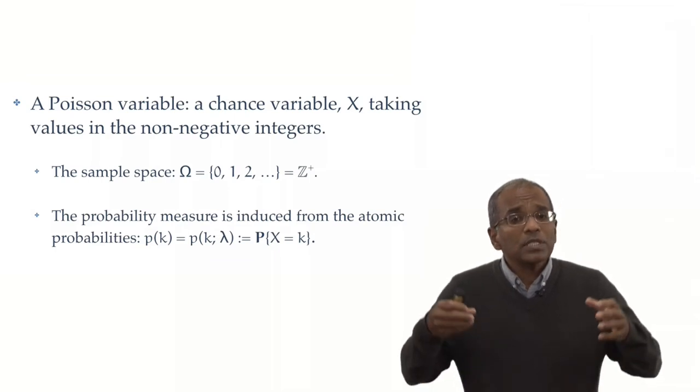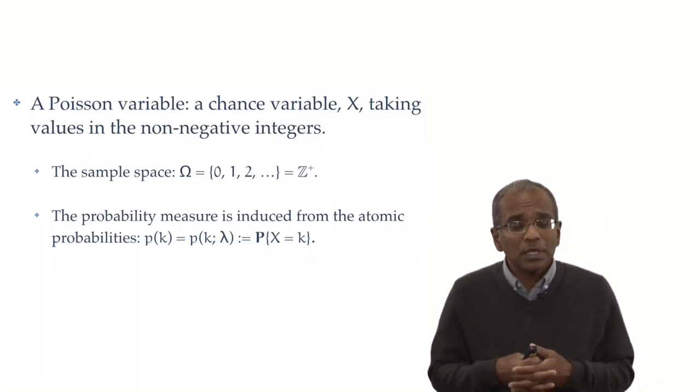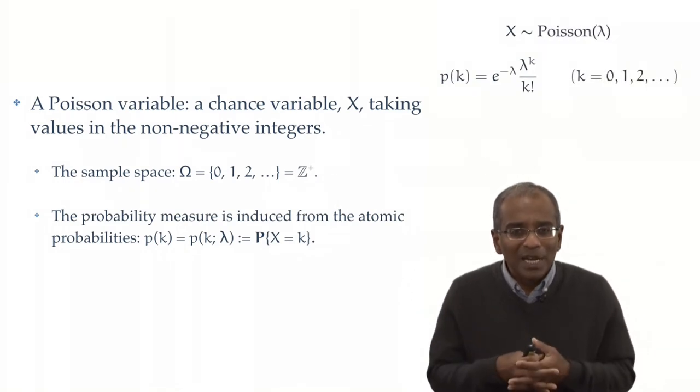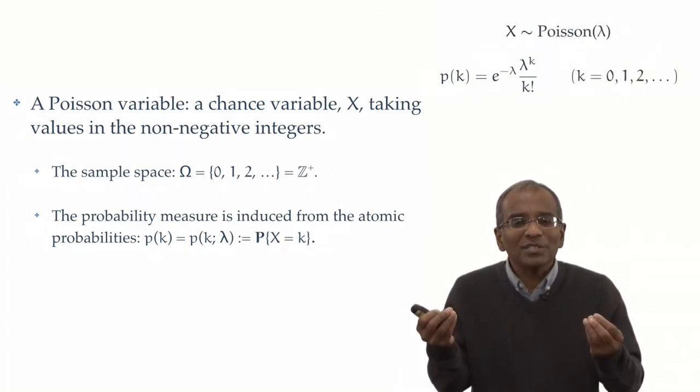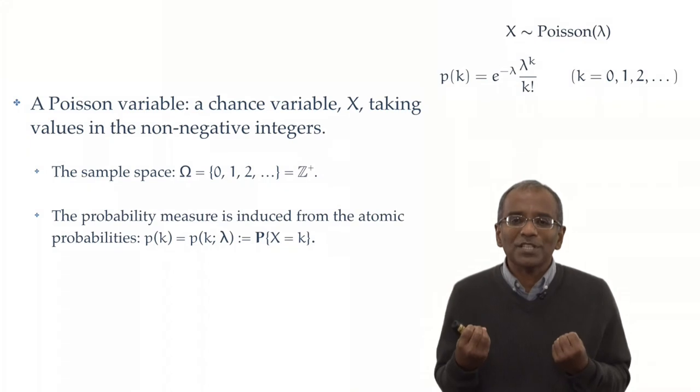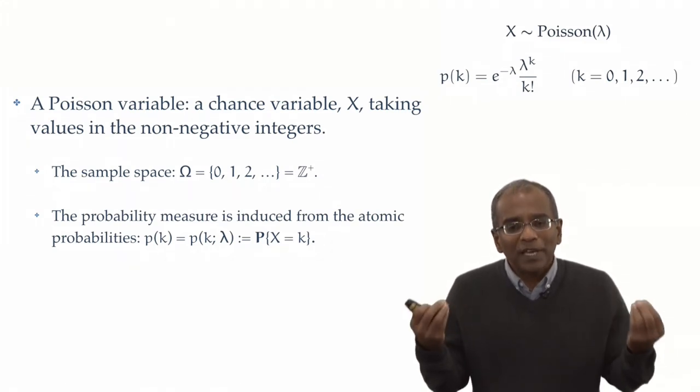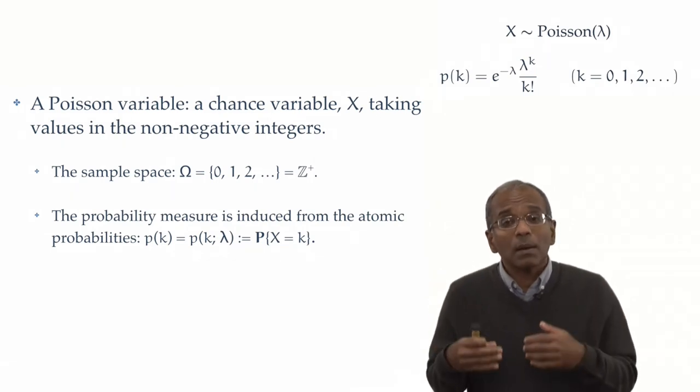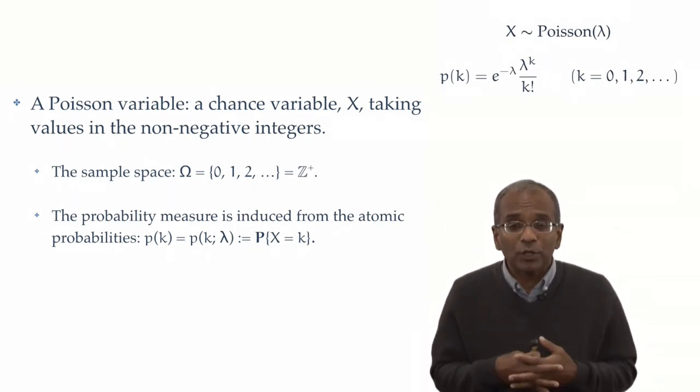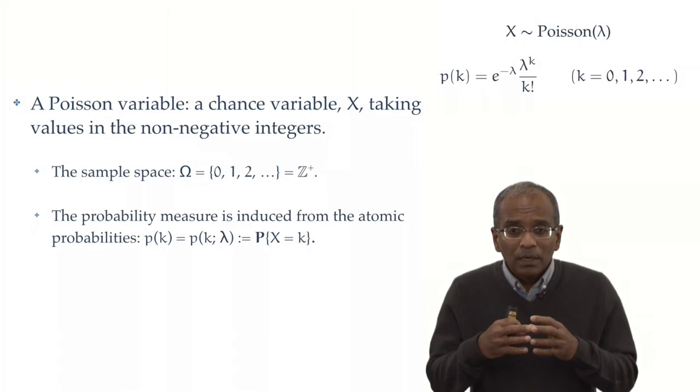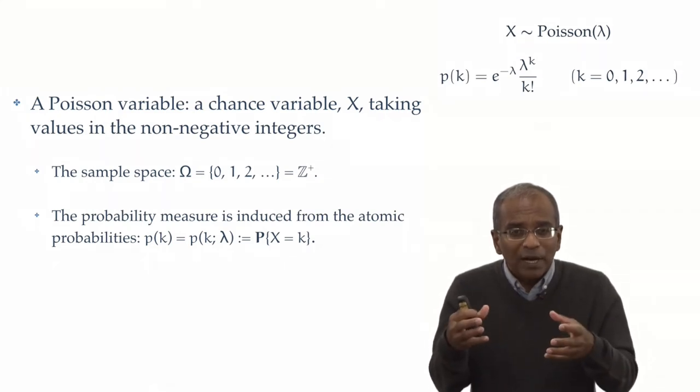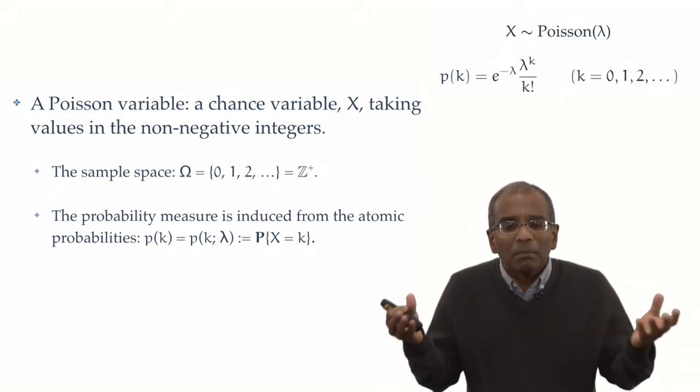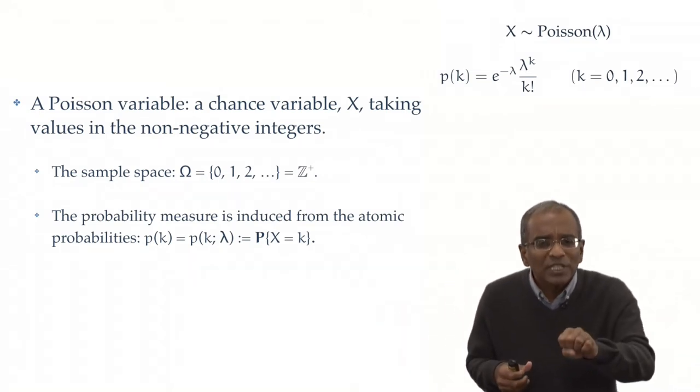So, formally, we will say the outcome of this chance experiment is a Poisson variable with parameter lambda. Its mass function, hiding the lambda for the time being, is p of k given by the Poisson form: e to the power minus lambda times lambda to the power k over k factorial. Naturally, we should verify that this indeed is a proper and bona fide mass function.